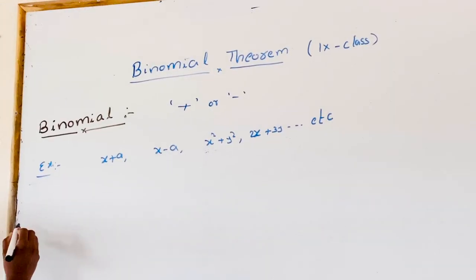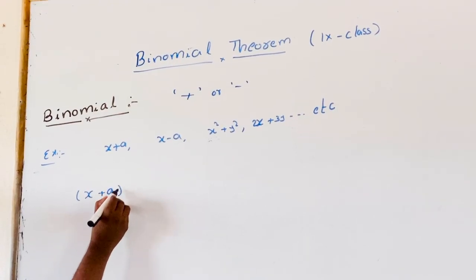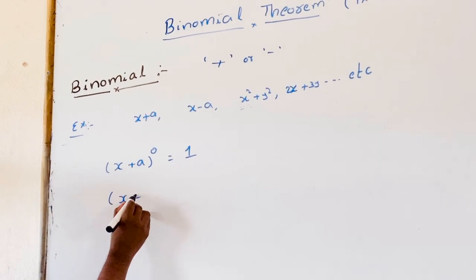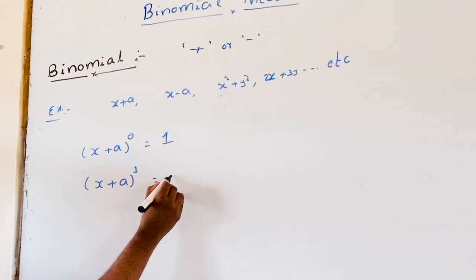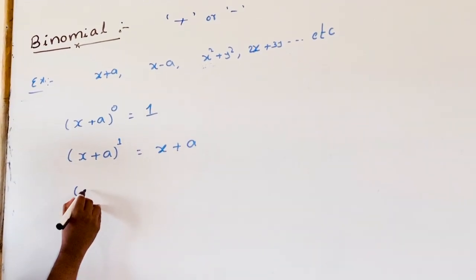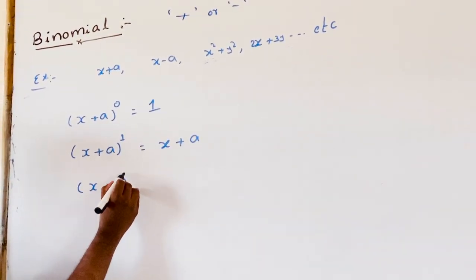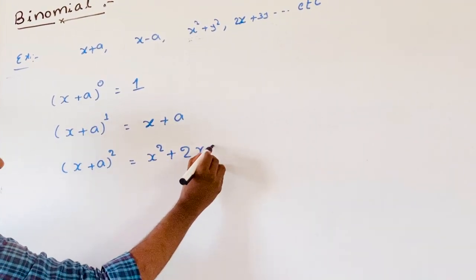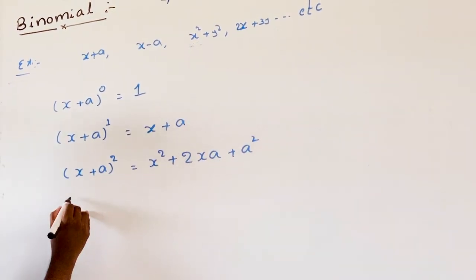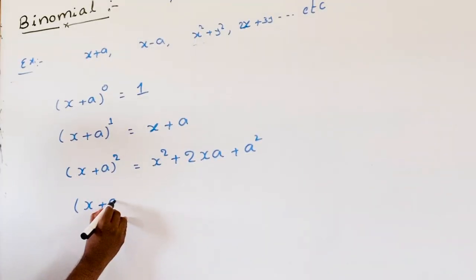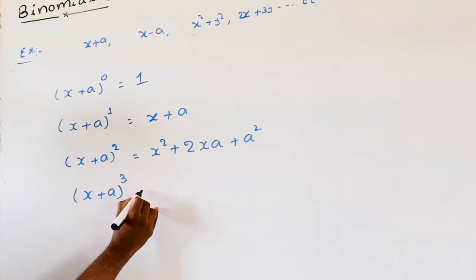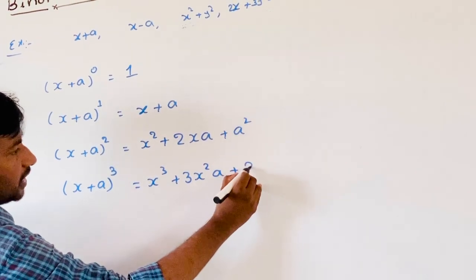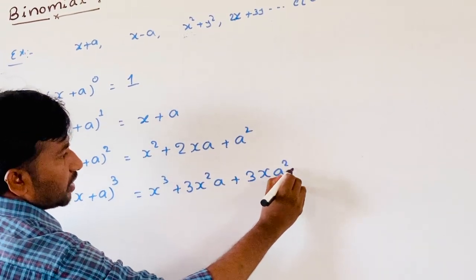Now we observe: (x+a) whole power 0 is equal to 1. (x+a) whole power 1 is equal to x plus a. The expression form of (x+a) whole square is equal to x square plus 2xa plus a square. We observe the expression form of (x+a) whole cube is equal to x cube plus 3x a square plus a cube.